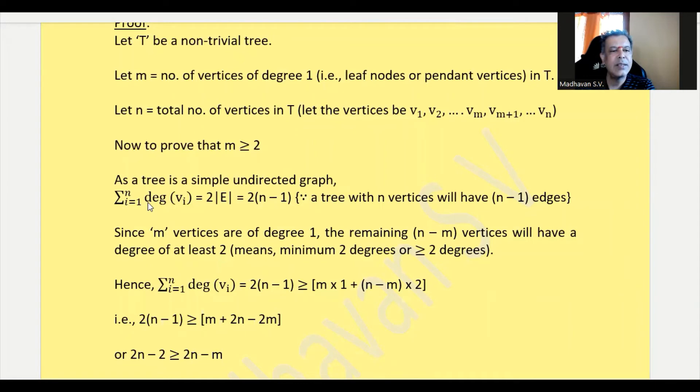Therefore, we can rewrite the summation of degrees of all vertices, which is 2(n - 1), should be greater than or equal to m times degree 1 plus (n - m) times degree 2. This should be less than that, which means this has to be greater than or equal to this.